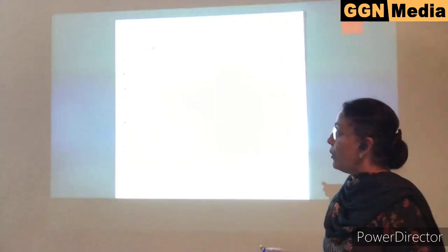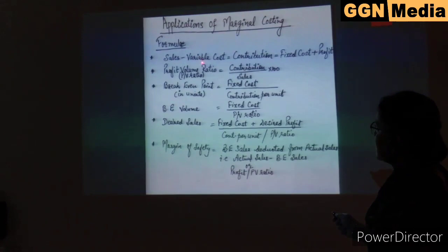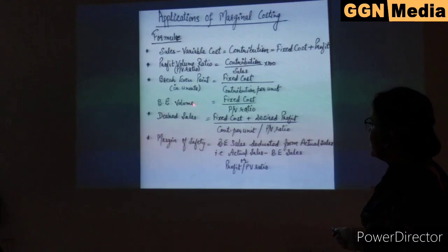Next is break-even point — it is a point where the businessman has no profit or loss. To calculate break-even point in units, fixed cost is divided by contribution per unit, which equals selling price minus variable cost per unit.